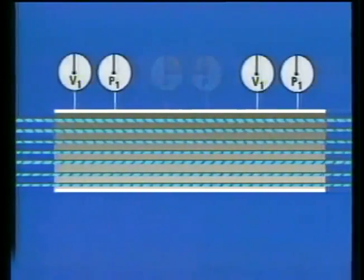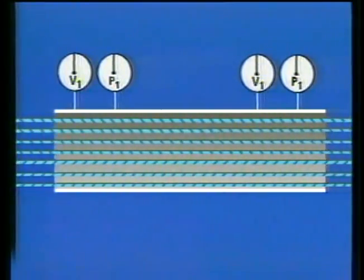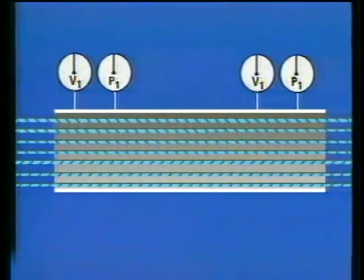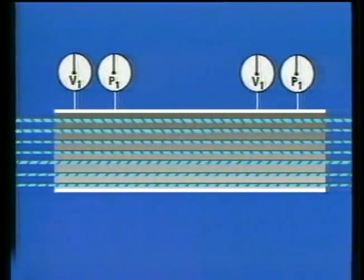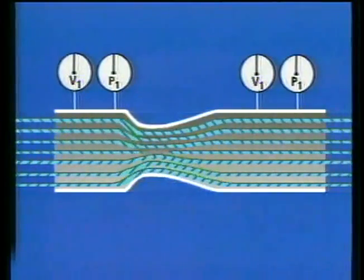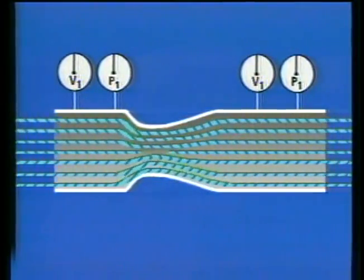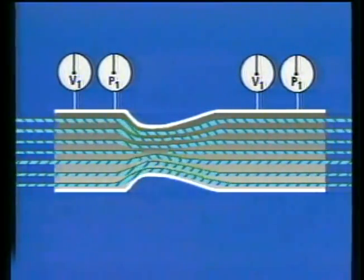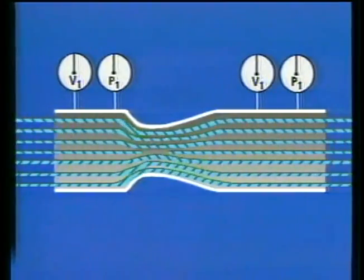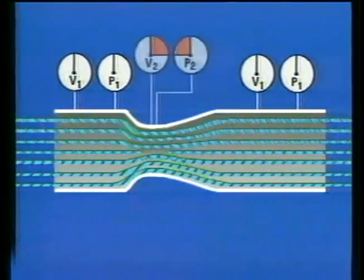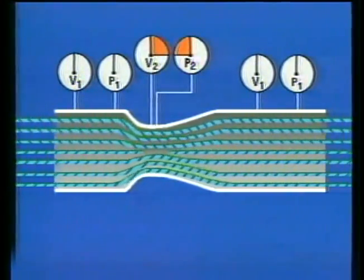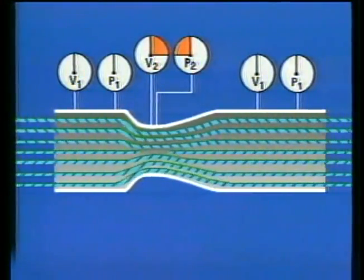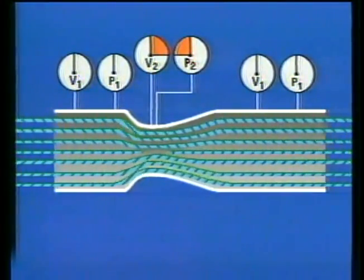Observing what happened to air as it passed through a tube, Bernoulli discovered that as the velocity of a fluid or gas increases, its pressure decreases. He also found that with a constant velocity, the pressure of the air remains the same at both ends of the tube. If a constriction is placed in the middle of the tube, the same amount of air has to pass through a smaller area.